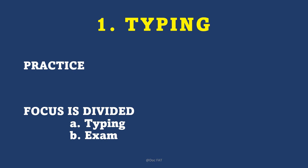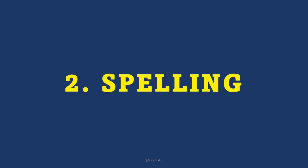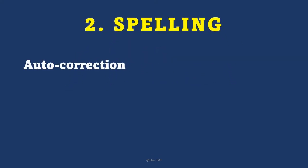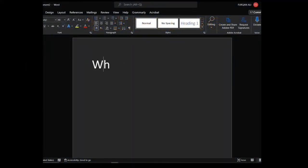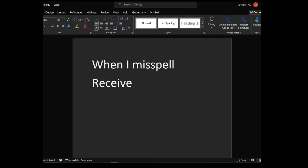That divided concentration matters a lot in this paper, because it's not just about English proficiency — it's about how much you can focus, your attention span, your concentration. The third con is spelling. When practicing the writing part at home, most of us practice on Microsoft Word, and Microsoft Word auto-corrects spellings. For example, if I misspell 'receive' as R-E-C-I-V-E, it just automatically corrects it.